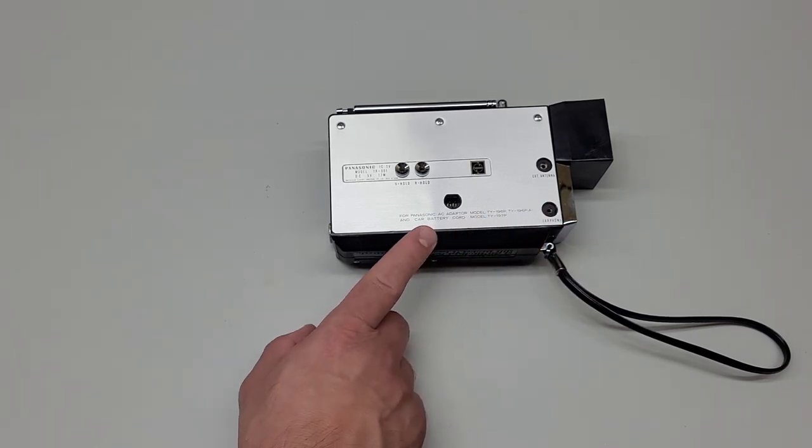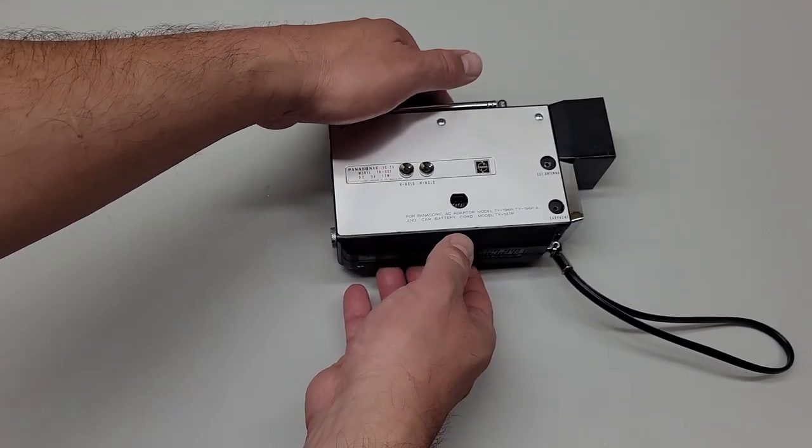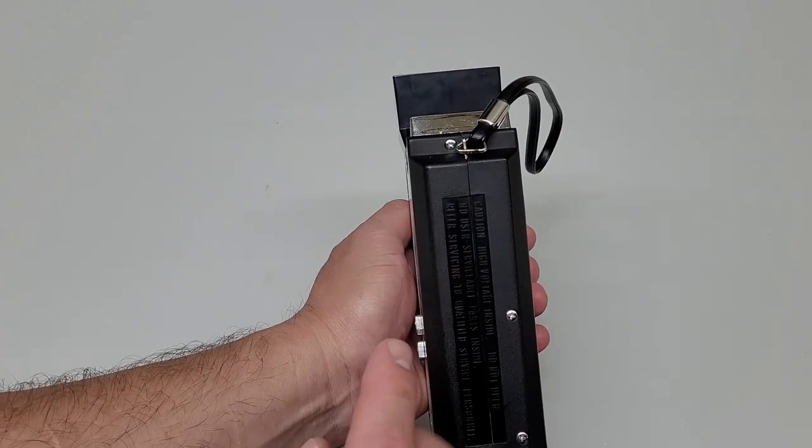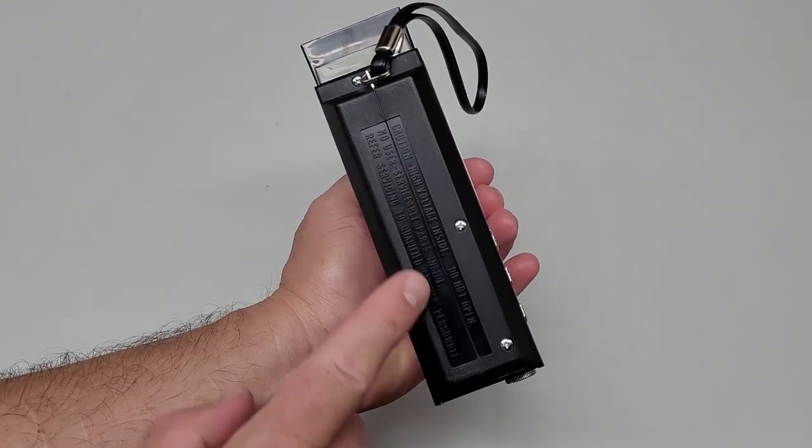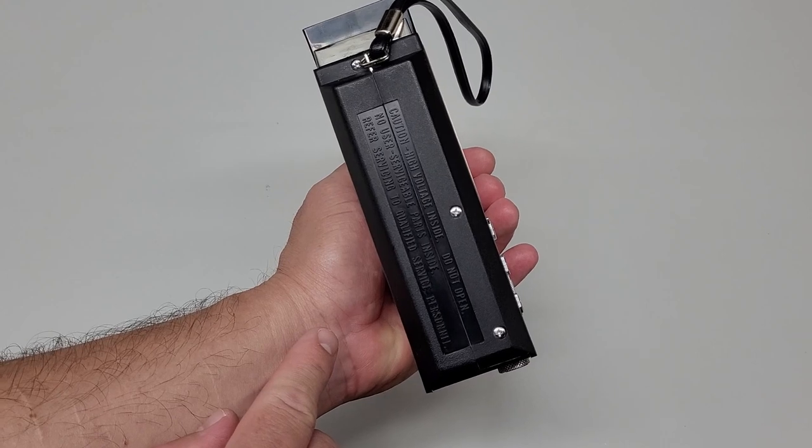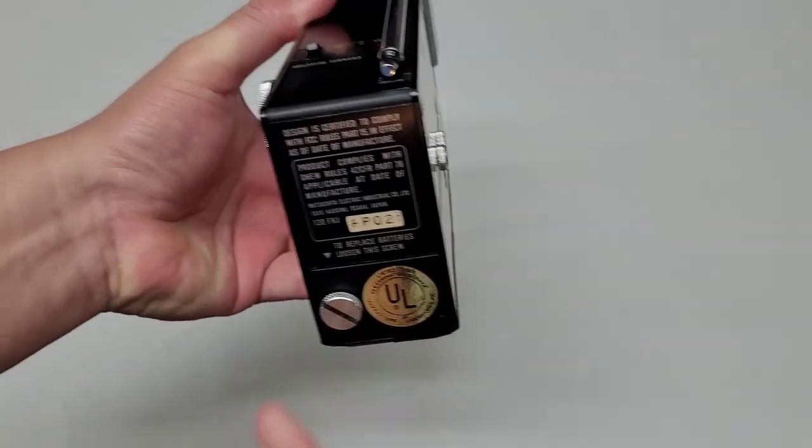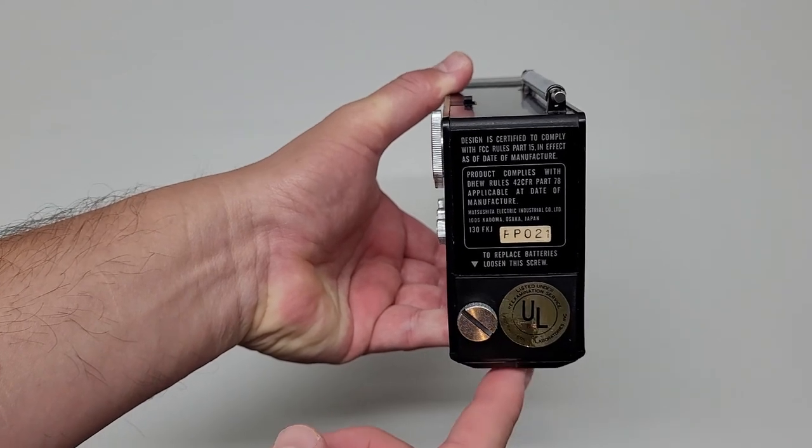You plug that in like you see now for the auxiliary plug for anything in your car, but they don't even have them anymore because everything's USB ports. These two other ports here, one is for an external antenna and that takes an input of a 2.5 millimeter connection. This one here is your earphone port.